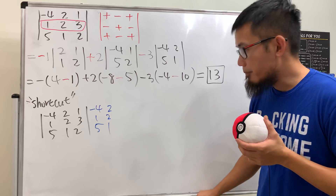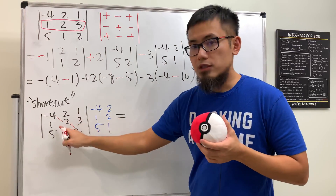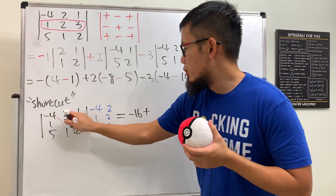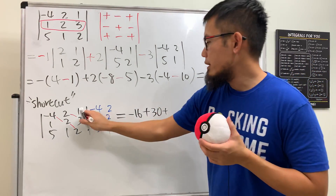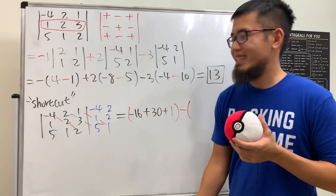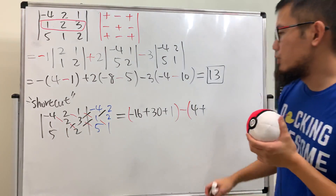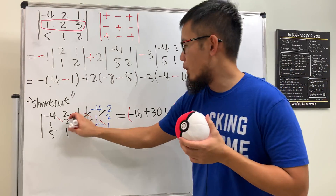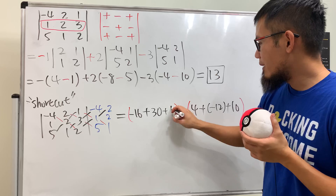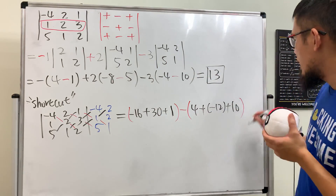So the first two columns copied on the side give us: negative four, two, one, two, five, one. Then we multiply the main diagonals: negative four times two times two = negative 16; plus two times three times five = 30; plus one times one times one = 1. Then subtract the other diagonals: two times one times one = 4 (but we subtract); negative four times three times one = negative 12; one times two times five = 10. The positive side totals 15 and the subtracted side totals 15 minus two — we indeed get positive 13.